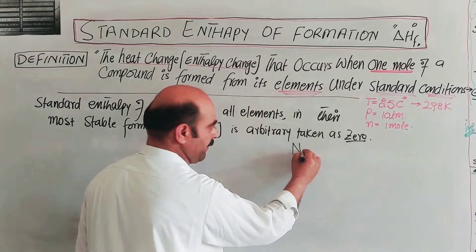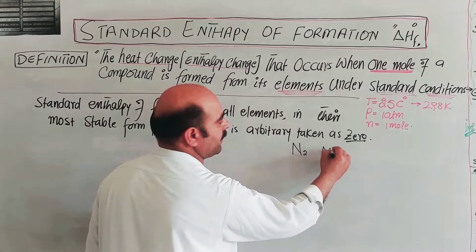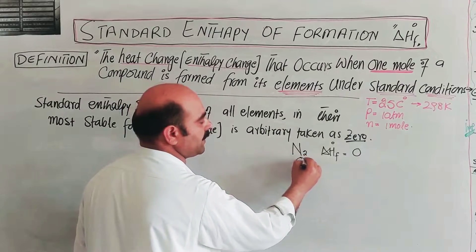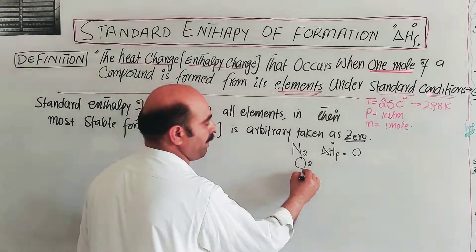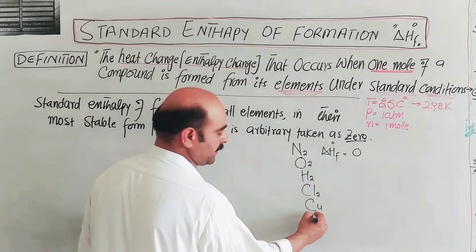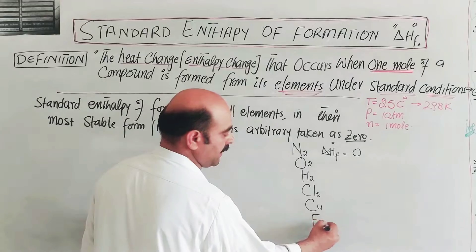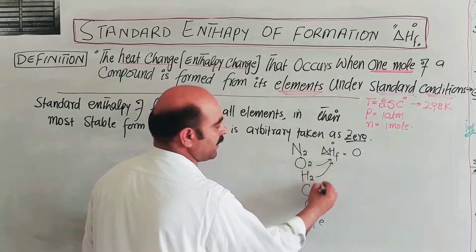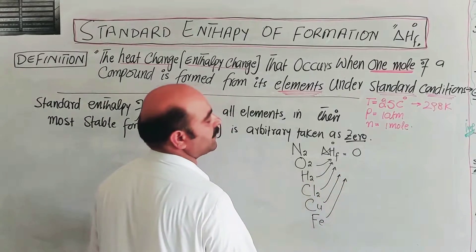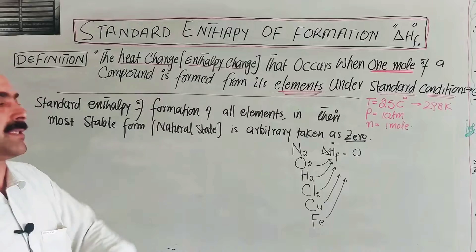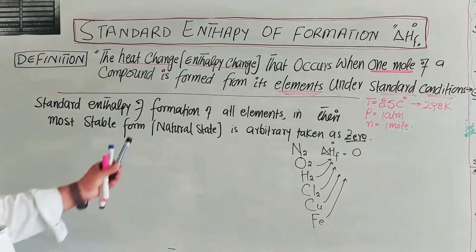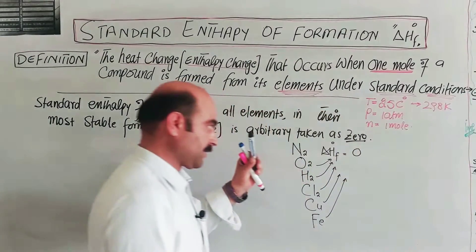For example, nitrogen in its elemental form has a standard enthalpy of formation of zero. Similarly, oxygen, hydrogen, chlorine, copper, and iron — all in their elemental form under standard conditions — have a standard enthalpy of formation of zero.